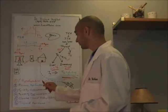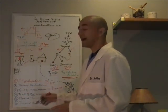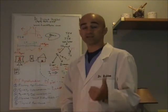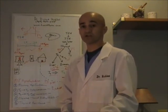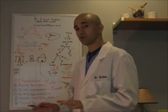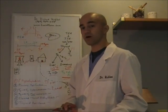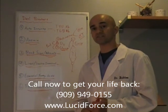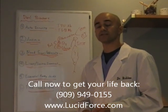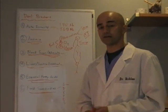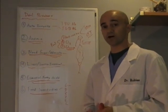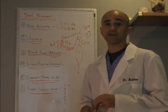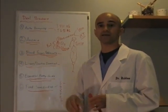So these six different pathways, how do we know which one you have? We run the tests. We check your blood, we check your saliva, we check your stool to see what's going right and what's not quite going right with your body. If what I said to you makes sense, I want you to go ahead and call my office, 909-949-0155, and make an appointment to come see me so that we can help you get your life back. Thank you very much for your time, and I look forward to seeing you soon.